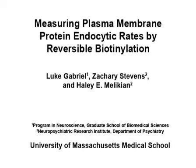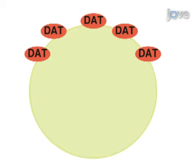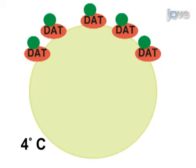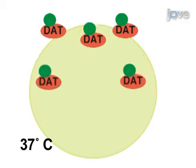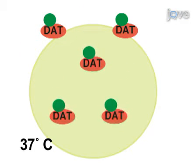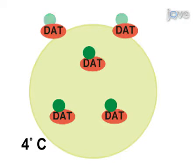This protocol provides a general method to measure the endocytic rate of most plasma membrane proteins using reducible membrane-impermeant biotinylation reagents. Cell surface proteins that contain extracellular lysines are covalently labeled at 4 degrees Celsius with sulfo-NHS-SS biotin. Cells are then warmed to 37 degrees Celsius to permit endocytosis of surface proteins, and returned to 4 degrees Celsius to stop membrane trafficking. Residual surface biotin is stripped using a reducing agent that cleaves the disulfide bond.